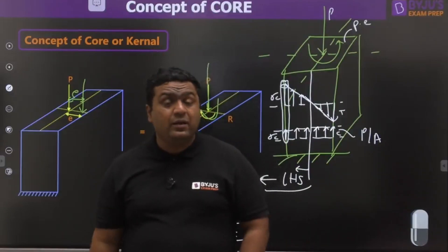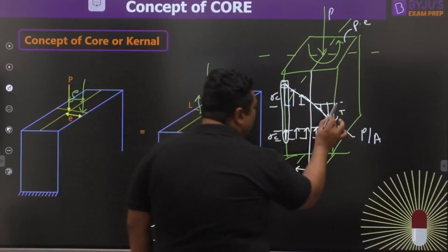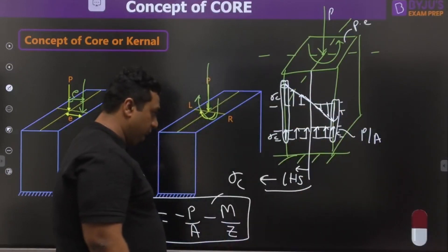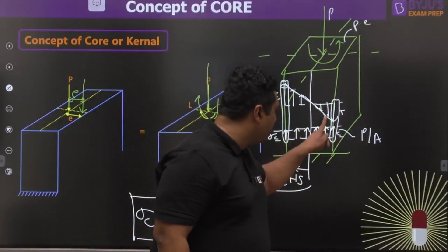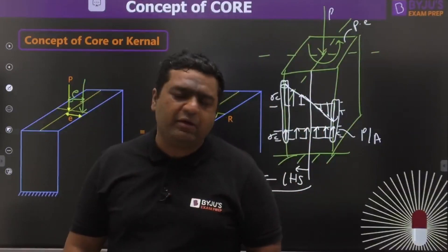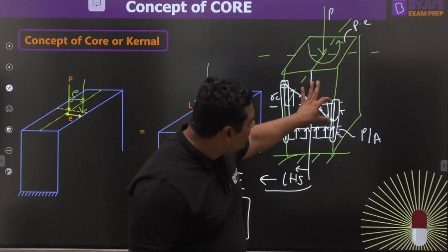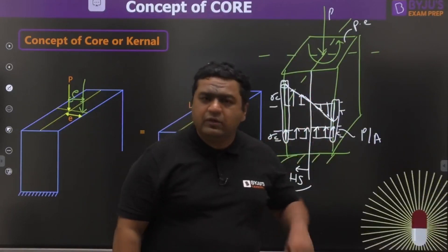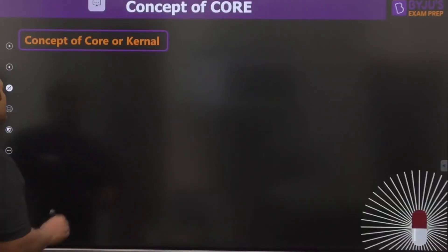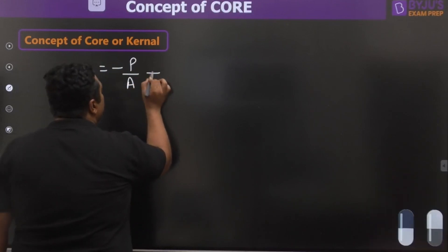We don't want the column to be under tension. If we give the guarantee that at this extreme fiber — where tension is maximum, because in bending outer fibers have maximum stress — if we can save this fiber from getting tension, the entire column will never be in tension. The stress on the right-hand side fiber is written as: -P/A + M/Z.